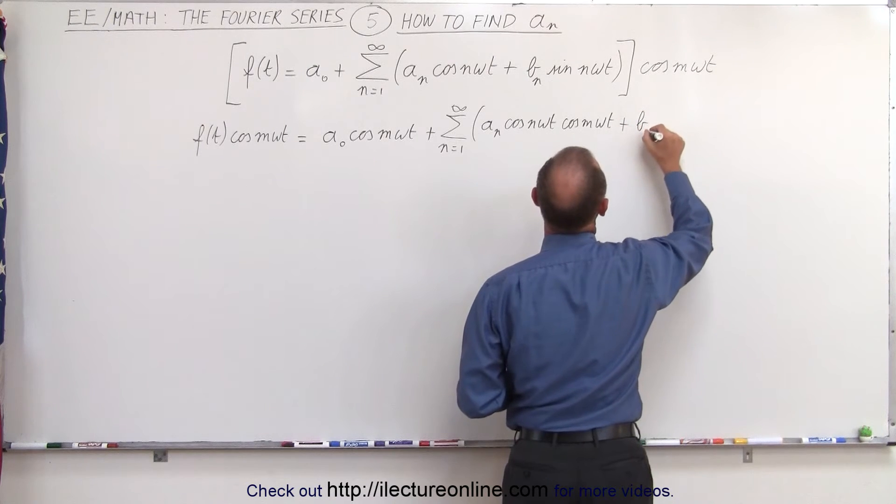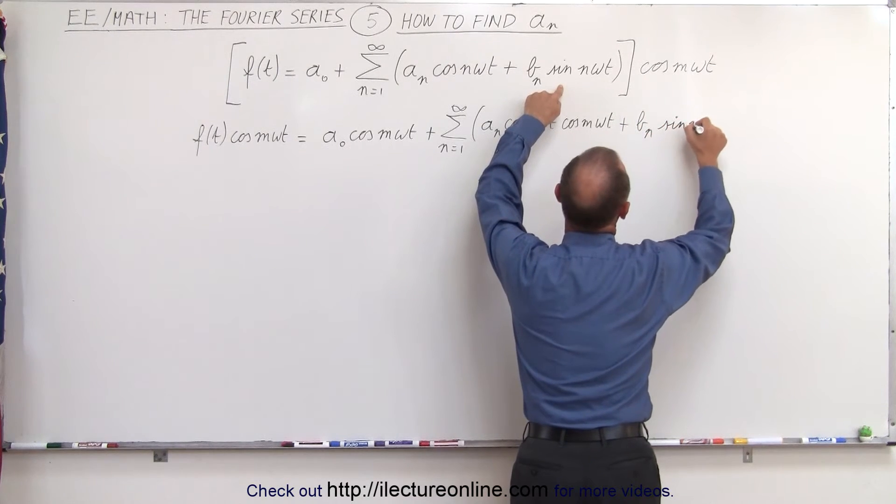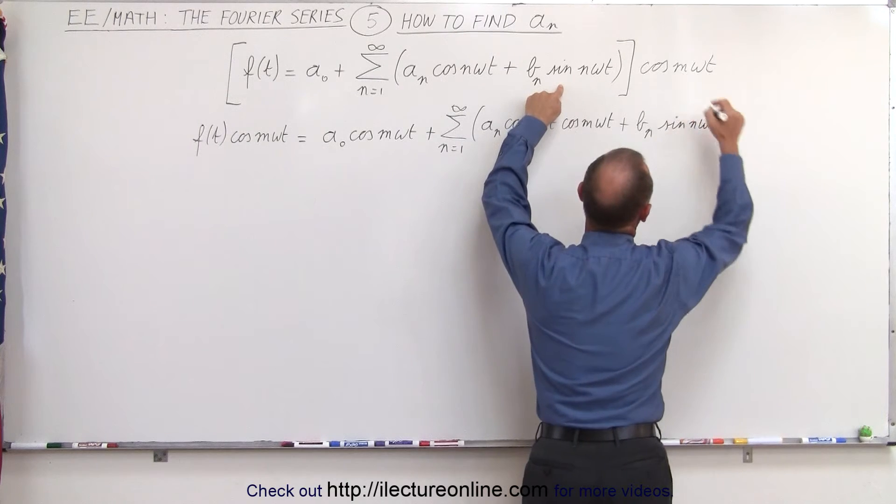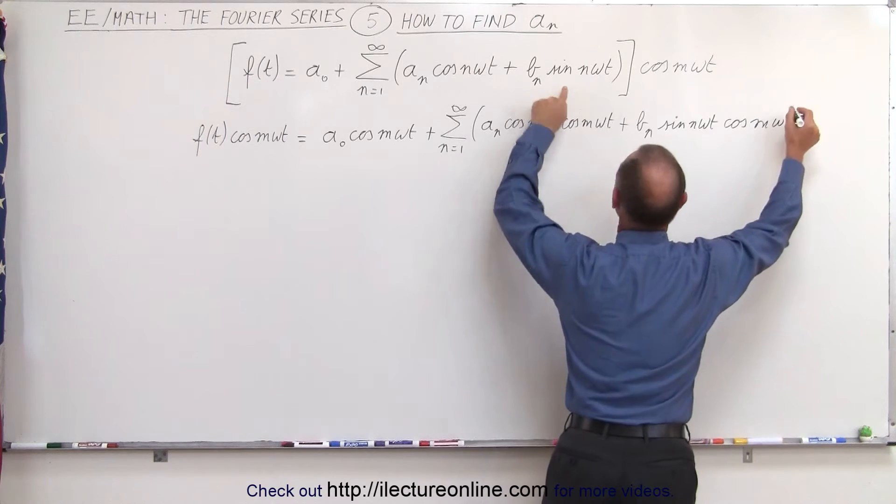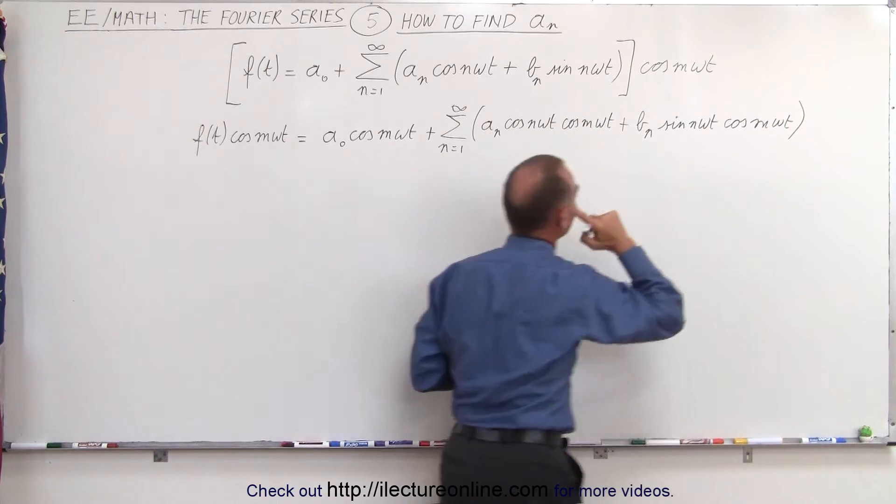Plus b sub n times the sine of n omega t times the cosine of m omega t. And let's put parentheses around it like that. All right.